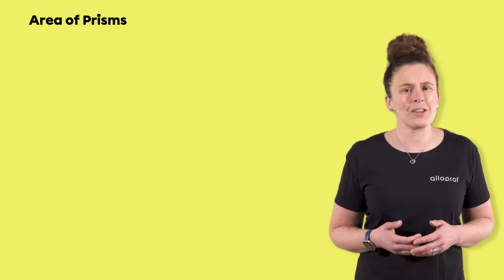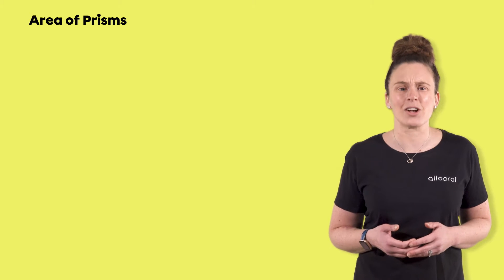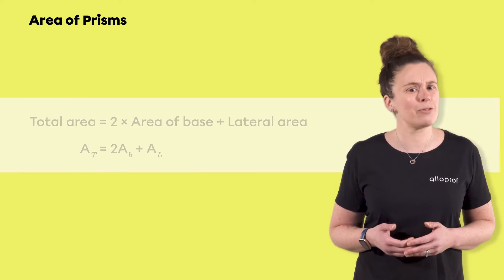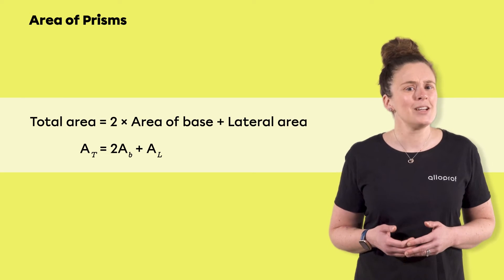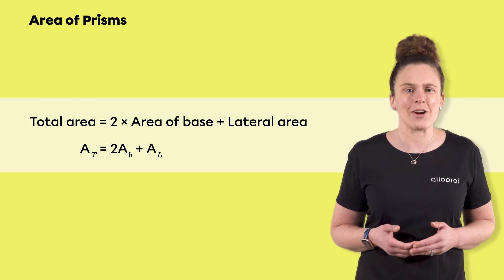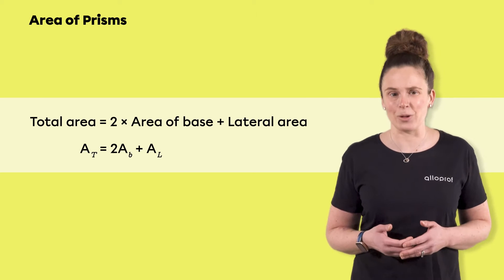There is another method to find the total area of a solid. You may know the following formula: total area equals twice the area of a base plus the lateral area.